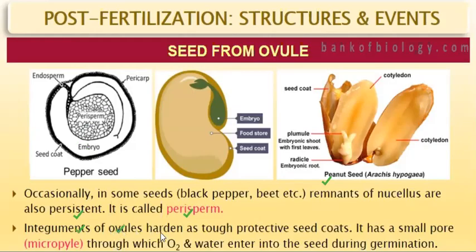The integuments of the ovule harden to form a tough, protective seed coat. This seed coat protects the seeds from the external environment. In the seed coat, you can visibly see the micropyle, which allows water and oxygen to enter the seed.